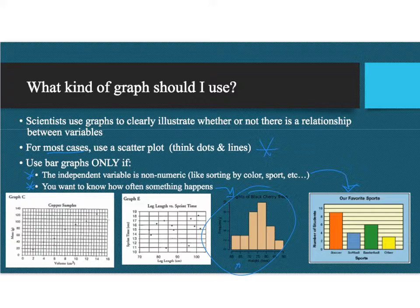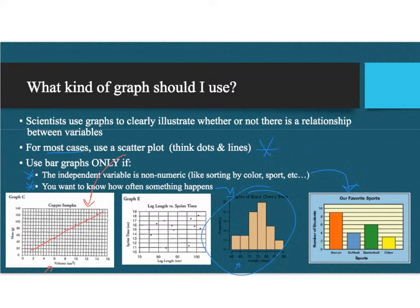This is an example of a scatter plot. You can see volume was our independent variable and mass is our dependent, and we can see a nice straight line. Not super straight, but if we did a best fit line, we could see that it trends upwards. So as volume increases, mass also increases, and we can see that clearly on this scatter plot.